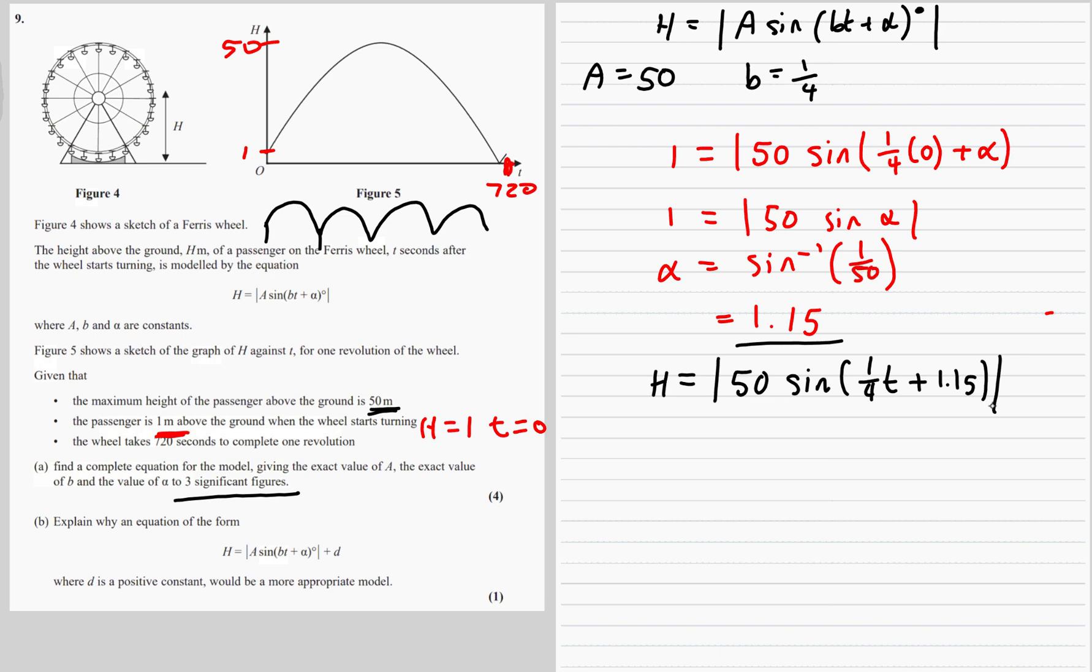Explain why an equation of the form h equals mod A sine Bt plus alpha plus d, where d is a positive constant, would be a more appropriate model. If we added a constant on to the end, it would shift the graph up. It would mean we don't hit zero, so it would mean that the passenger would not hit the ground.